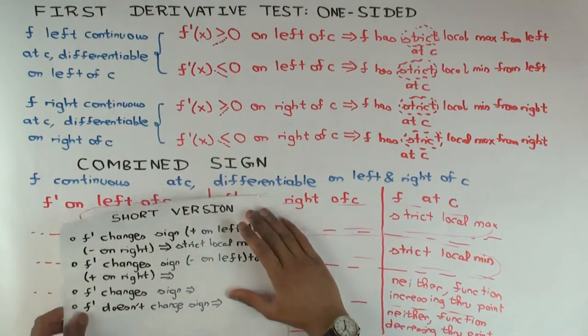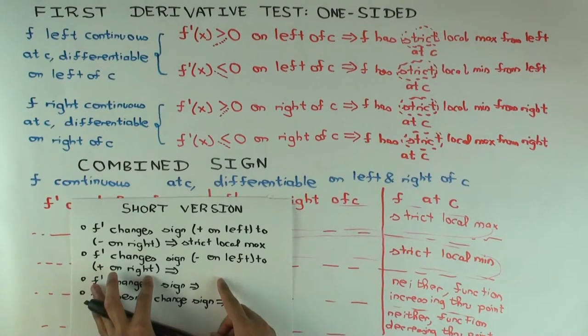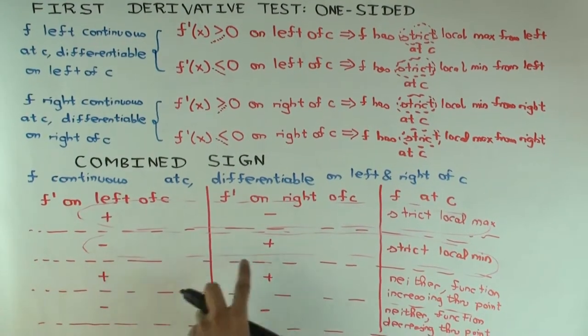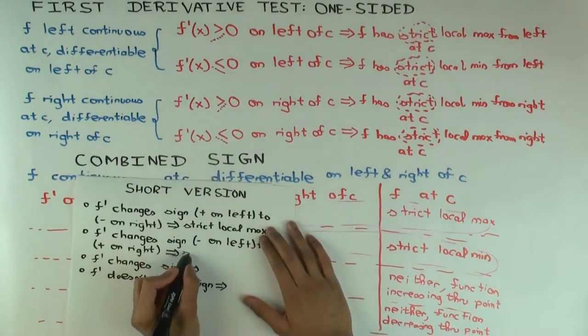What happens if it changes sign from negative on the left to positive on the right? Then what do we have? Negative on the left to positive on the right means strict local minimum.